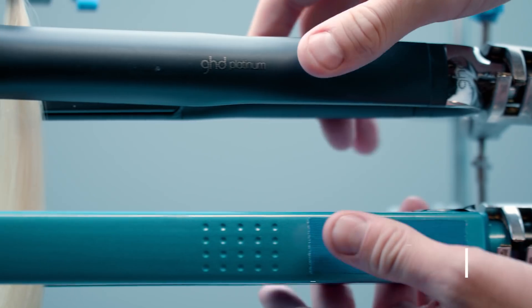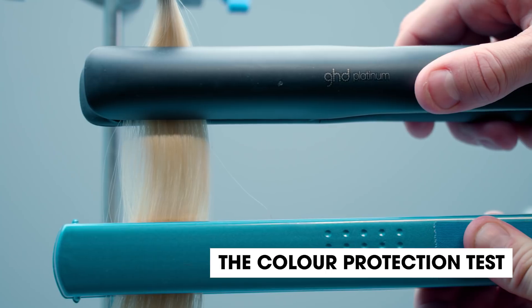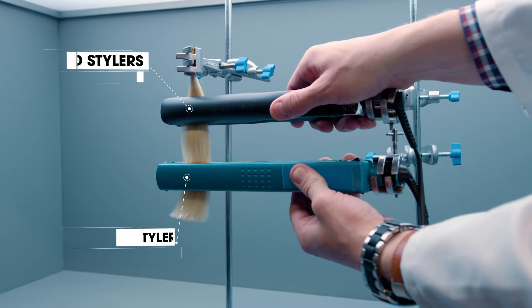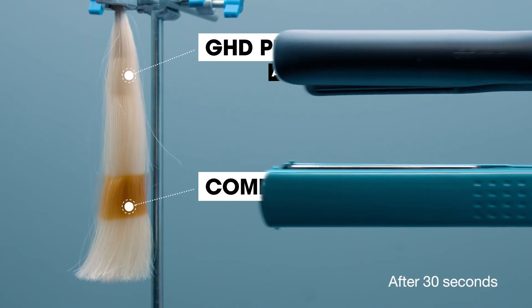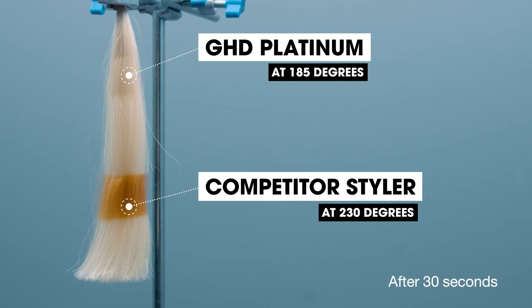We do a lot of testing here at GHD. Let me give you some examples. This test tells us how color varies with temperature. Obviously, you don't want the color of your hair to change. So at 185, you can see that it doesn't. At 230, it does.